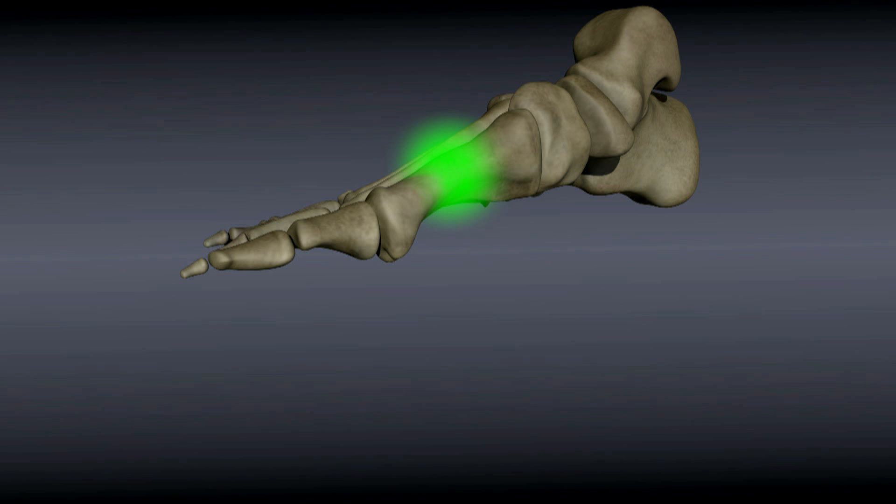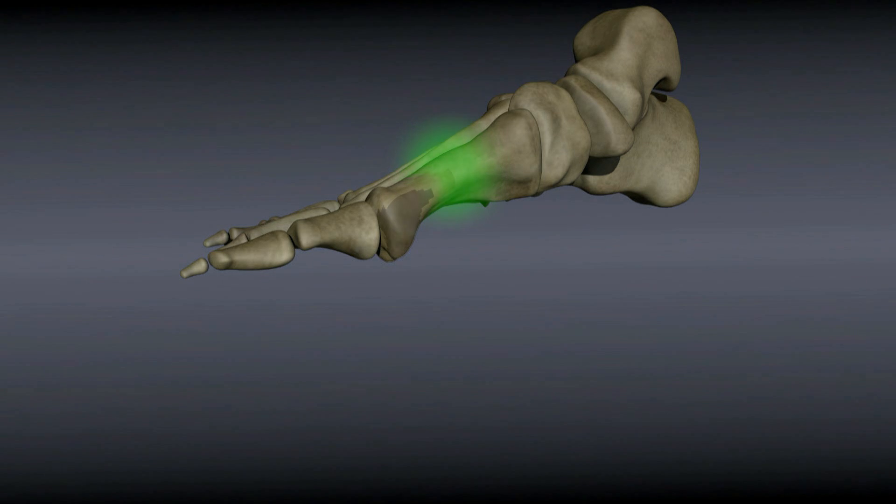Whatever the cause and whatever the source, the infection can begin to eat away at the bone. This can result in pain, loss of function, a collection of pus known as an abscess, and dead bone.